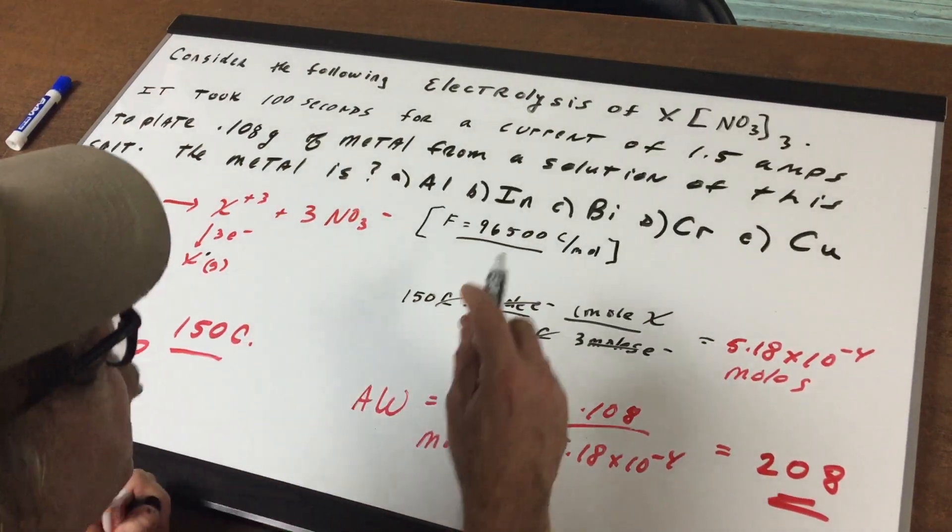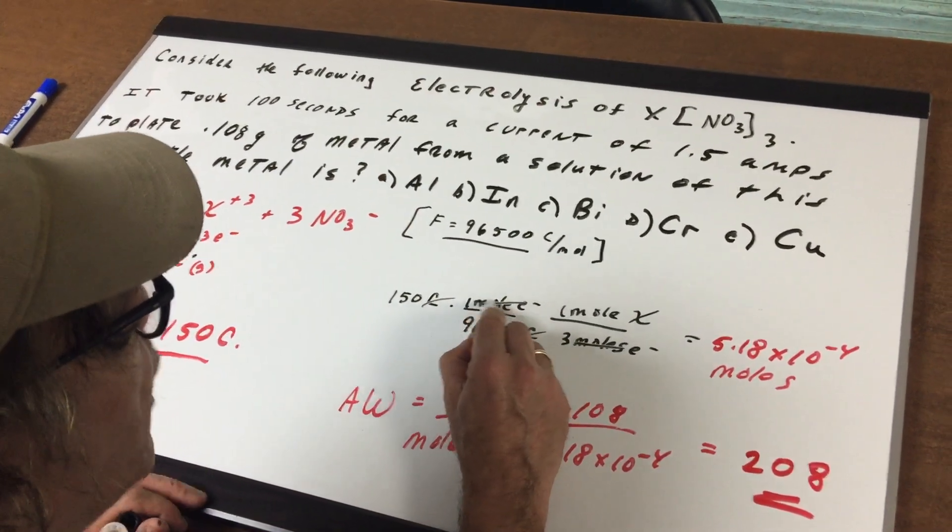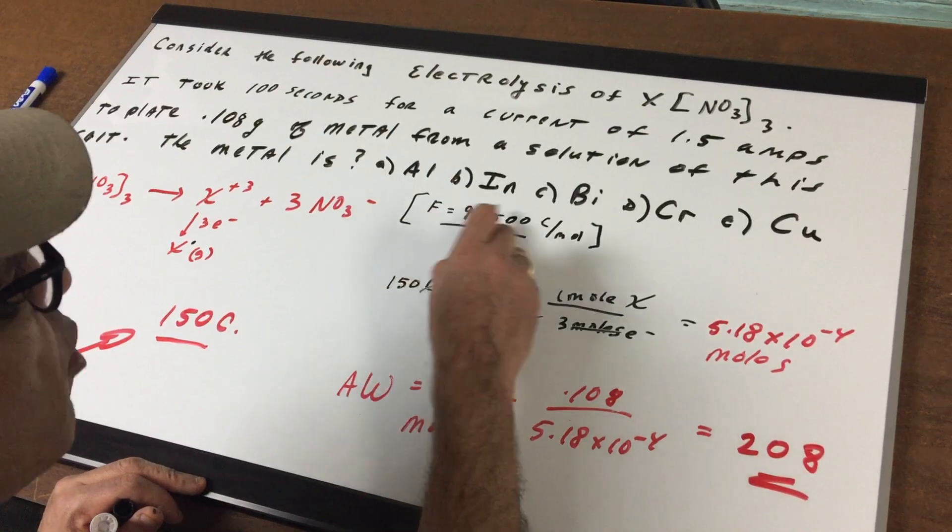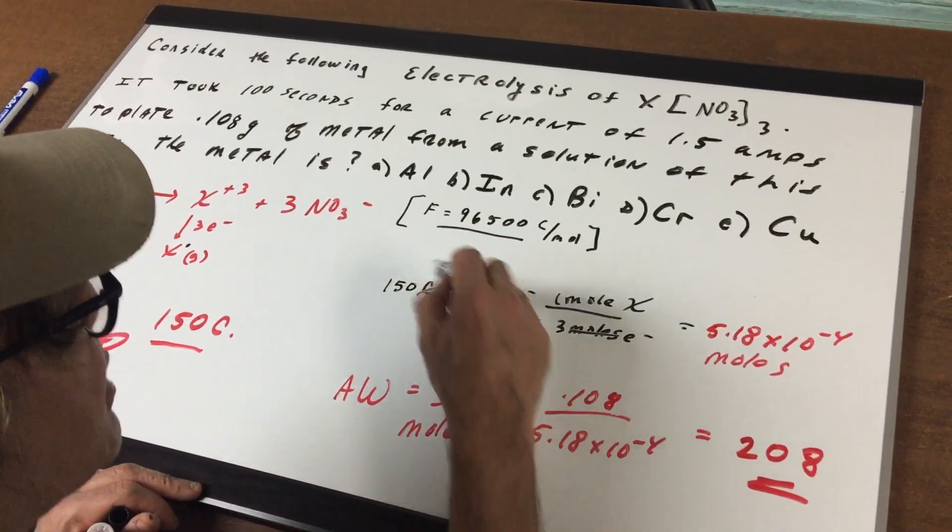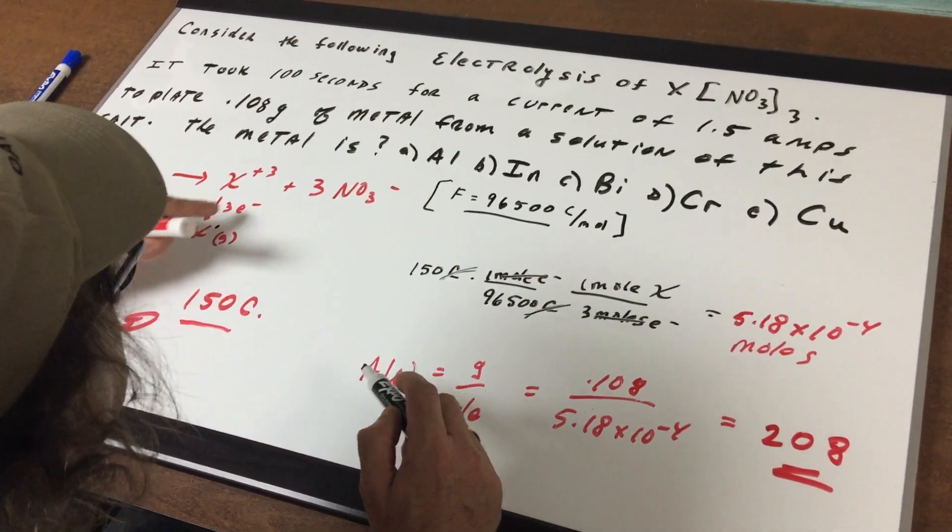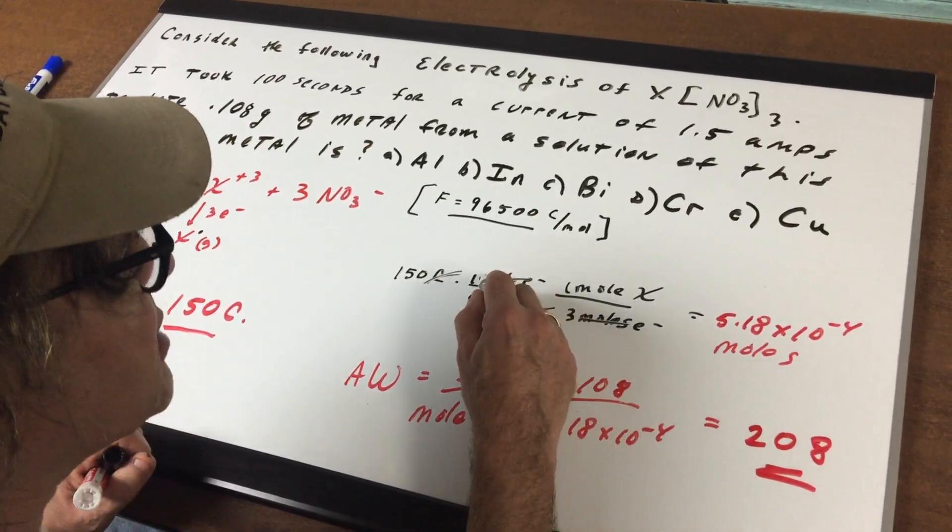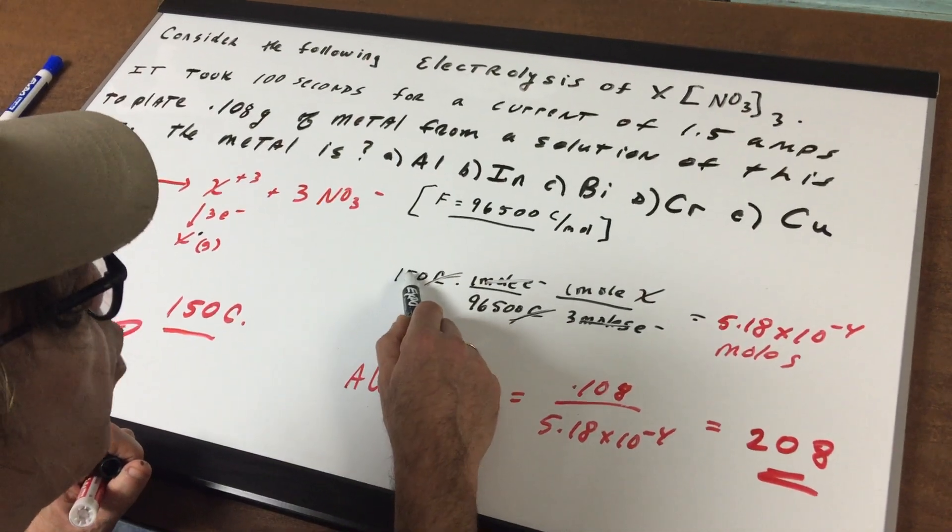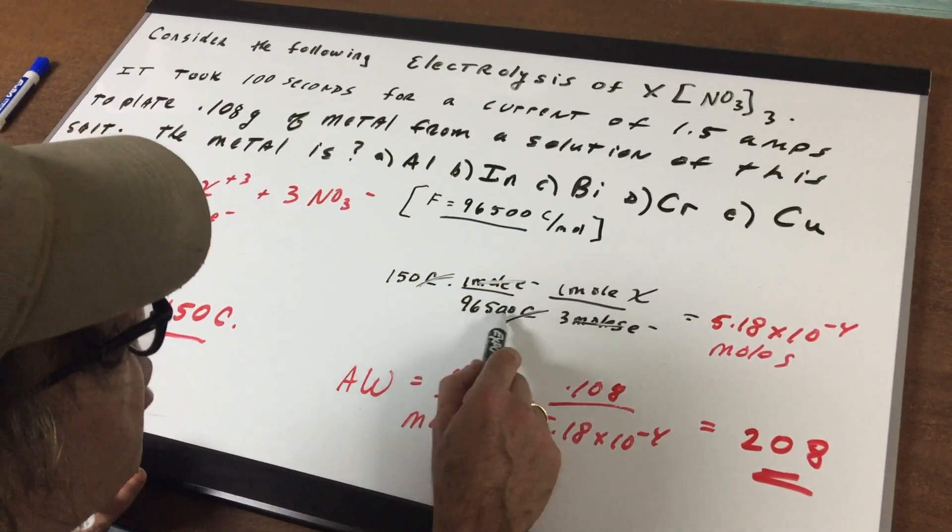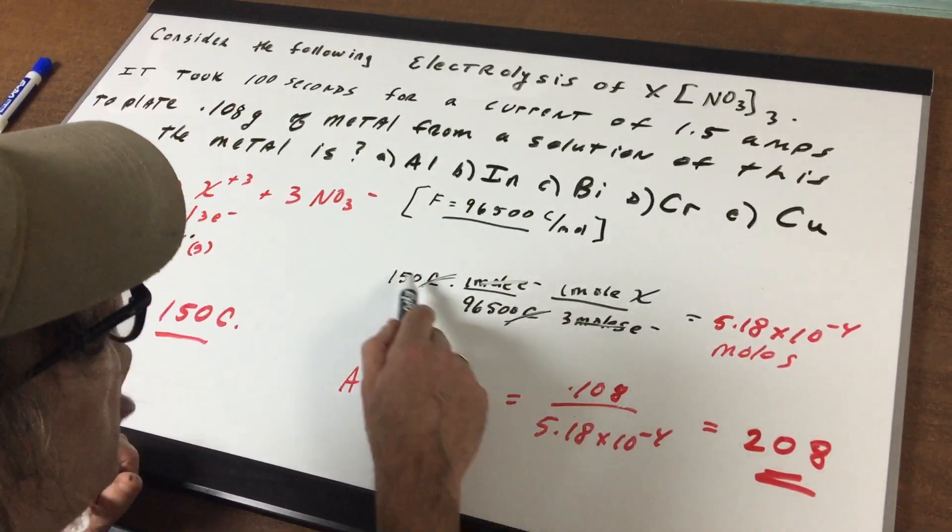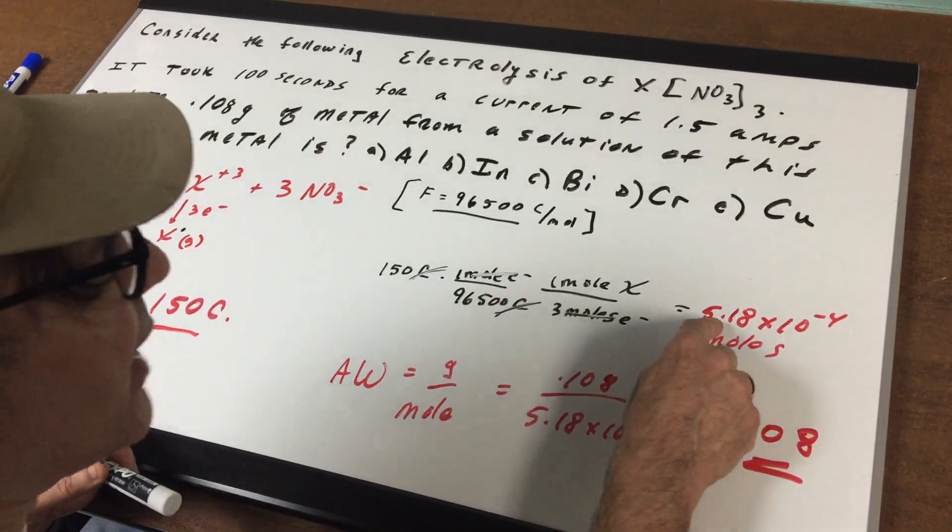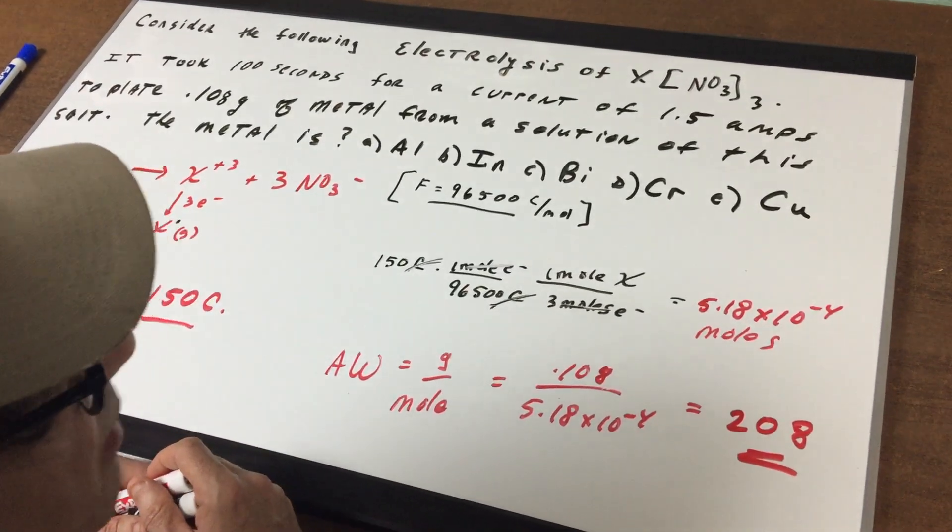I'm going to take that 150 coulombs of charge and watch what I do. We know that one mole of electrons is 96,500 coulombs. That's also that Faraday constant. One mole of this compound X requires 3 moles of electrons. So when I take 150 divided by 96,500 over 3, on the actual DAT you would just round this to 100,000. So this would be 150 over 300,000. You would get an answer pretty close to 5.18 times 10⁻⁴ moles.